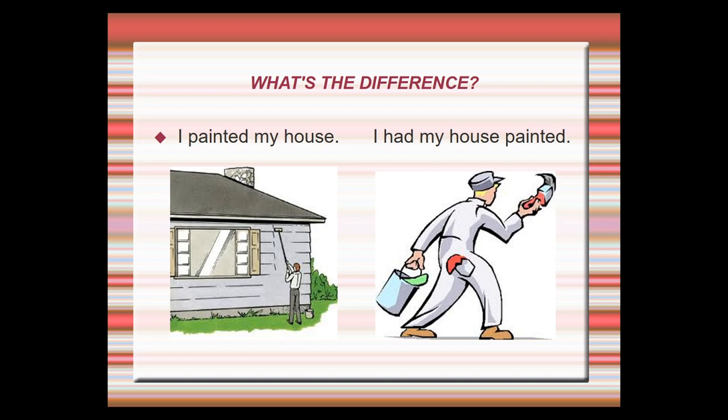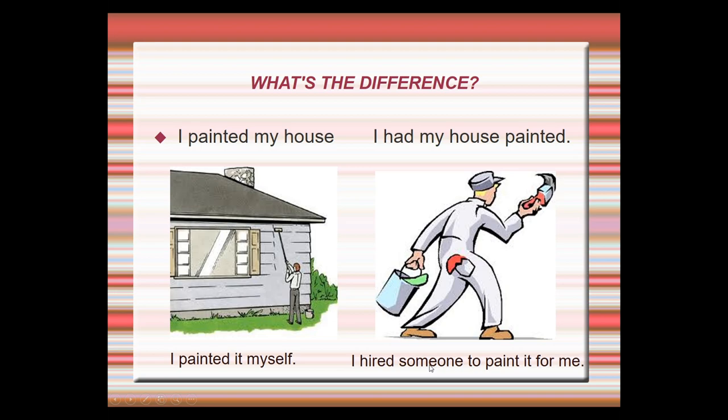Let's start with a little comparison. Look at these sentences: I painted my house and I had my house painted. There is a difference. If we say I painted my house, it means that I painted it myself. But if I say I had my house painted, it means that I hired someone else to paint it for me — someone else did the job for me.